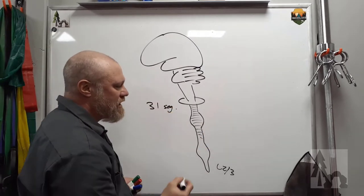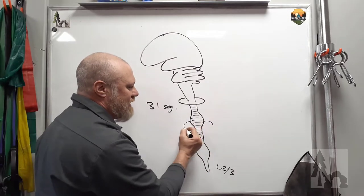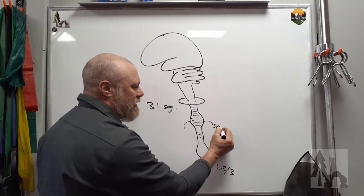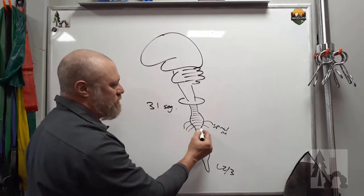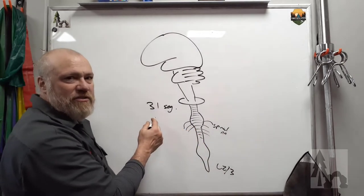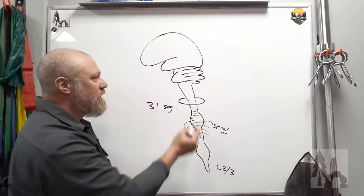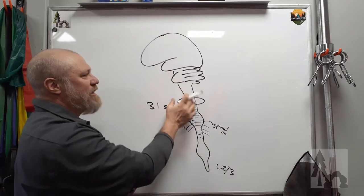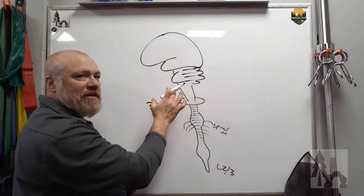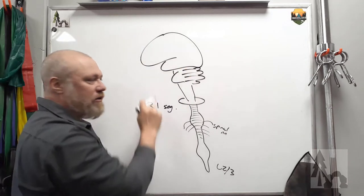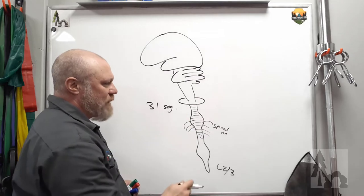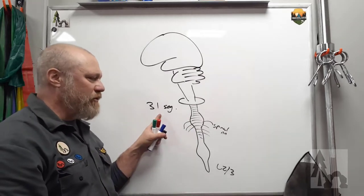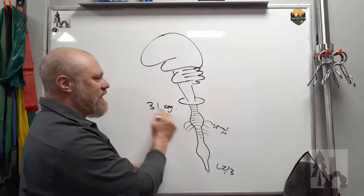The spinal cord is a segmented structure. There are 31 segments. All right, 31 segments. Each segment gives a left and a right spinal nerve. There are spinal nerves, so there are 31 pairs of spinal nerves. That means there are 62 spinal nerves altogether. Then there are 12 pairs of cranial nerves that exit off the brain stem and the brain through the skull. The spinal nerves are all off the spinal cord. 31 pairs of spinal nerves to go right and left with each of the segments.